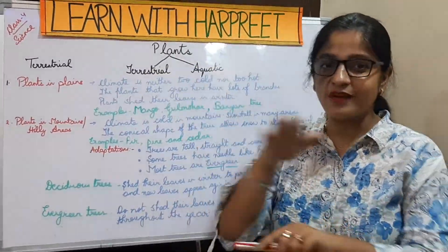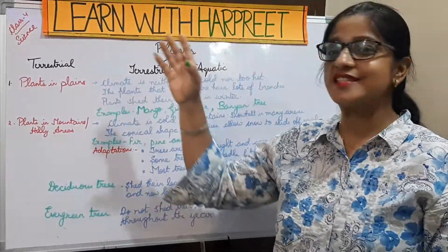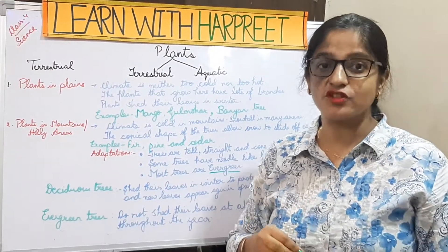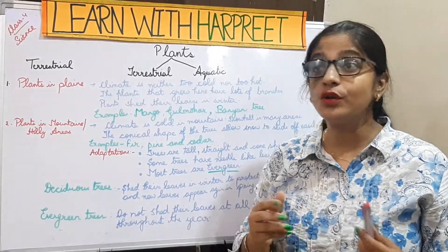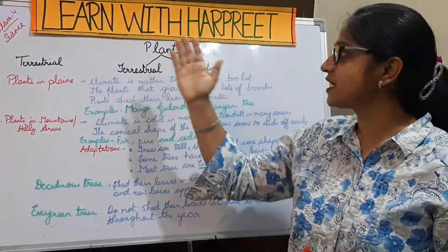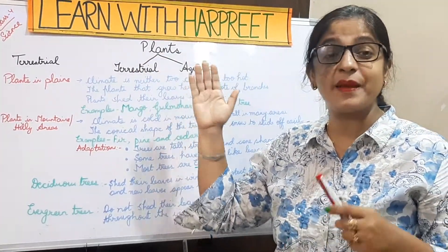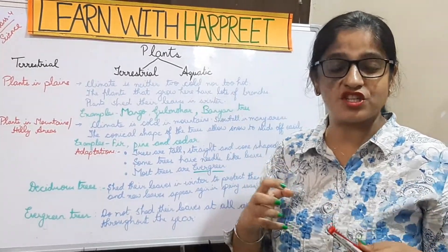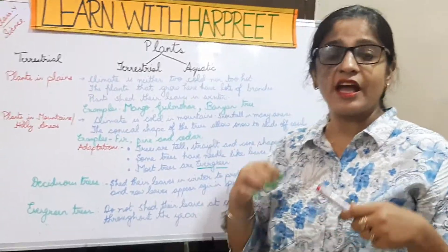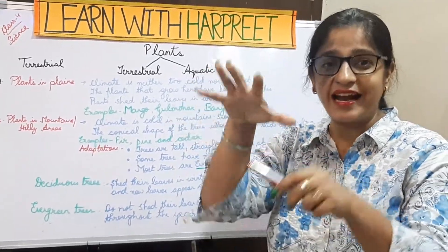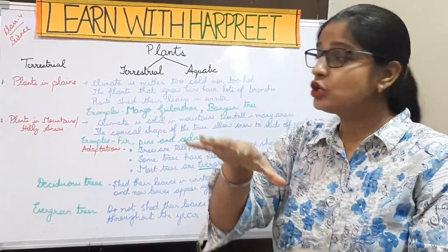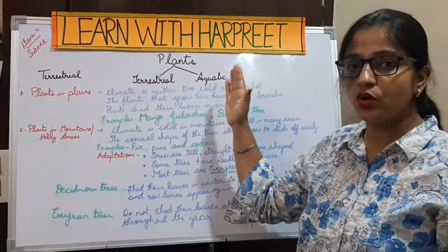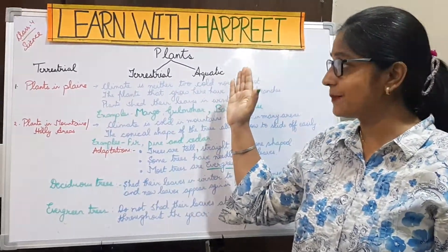This is the continuation of my last video for class four Science, where I was teaching you plant adaptations. I told you plants are of two types: terrestrial plants and aquatic plants, depending upon the habitat where they live. They have features according to which they can easily live in that habitat. Today I will discuss terrestrial plants and then move on to aquatic plants.